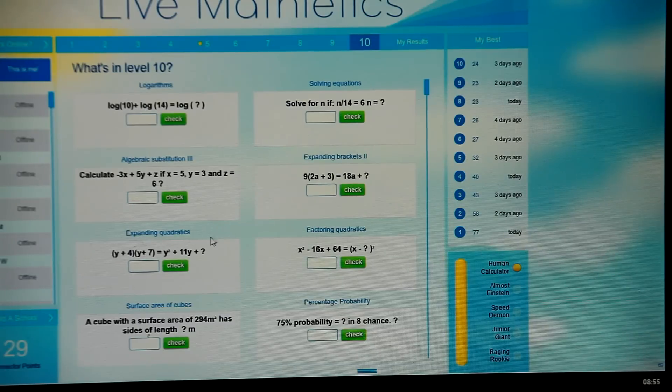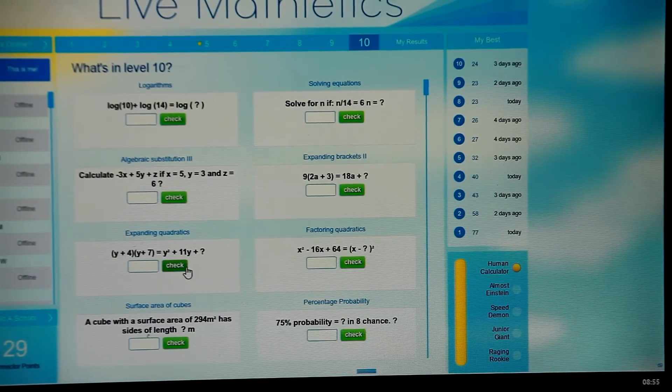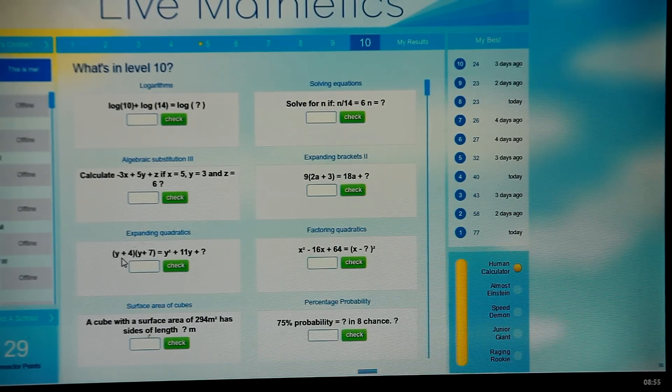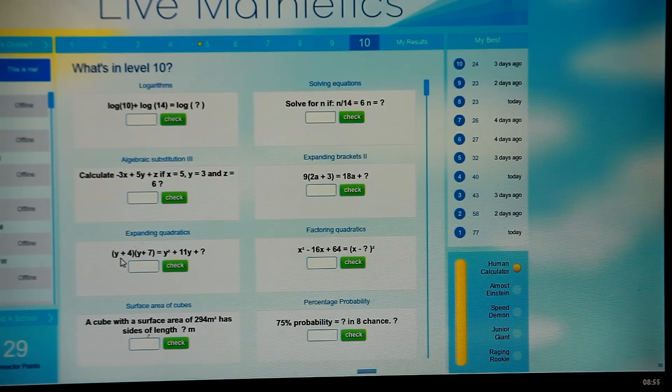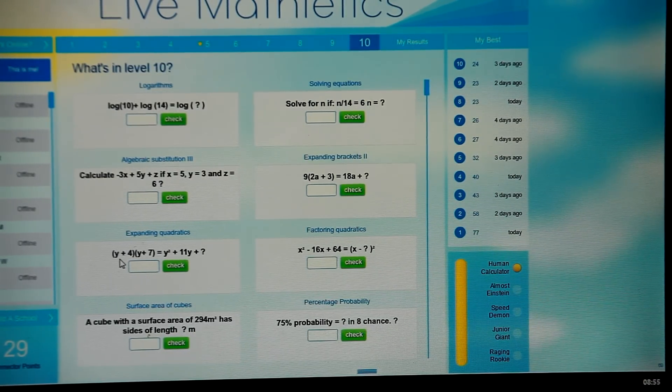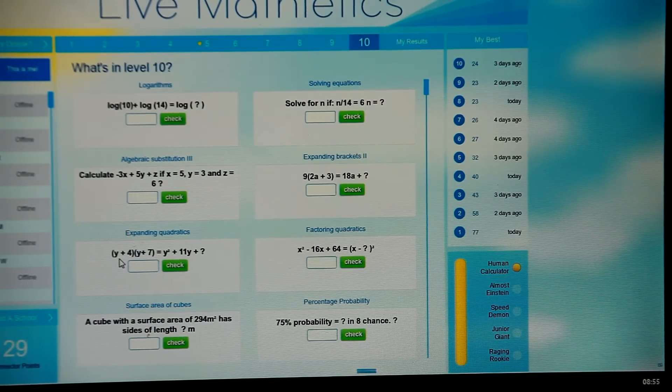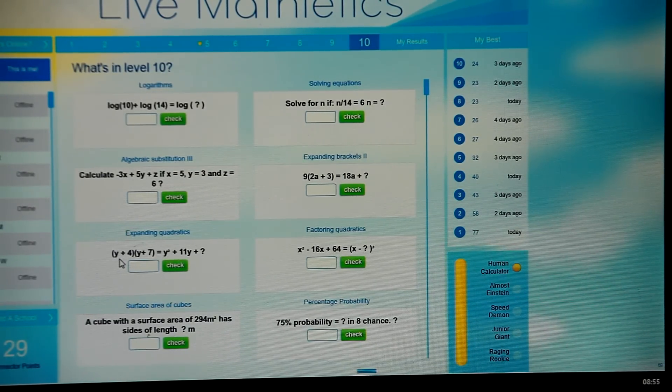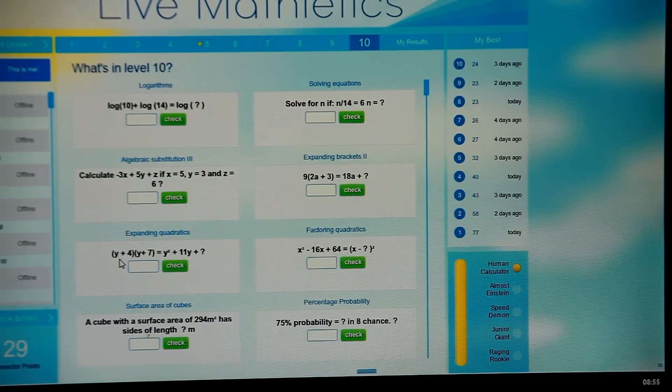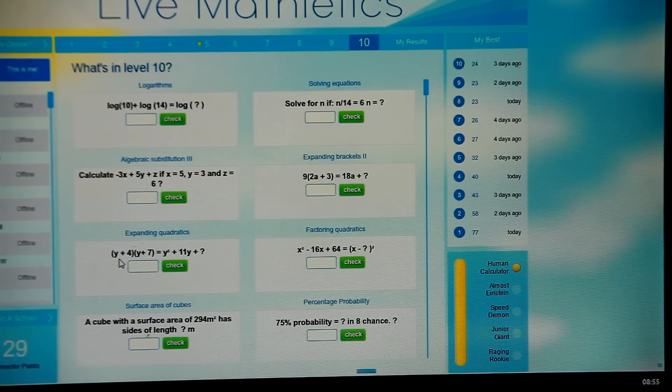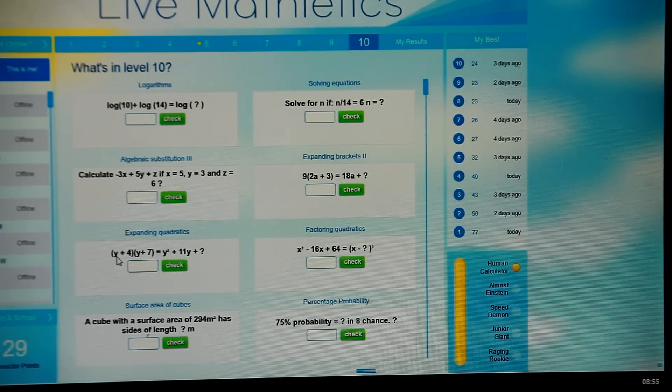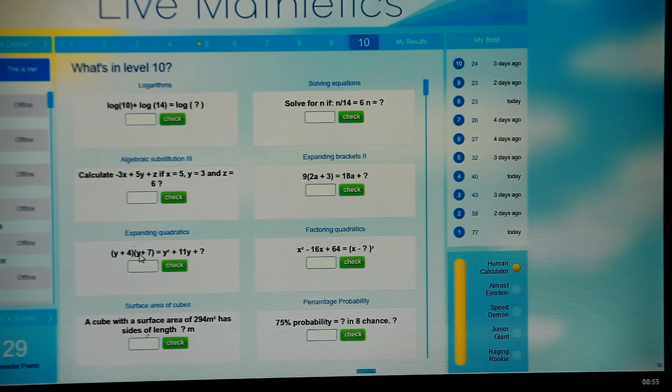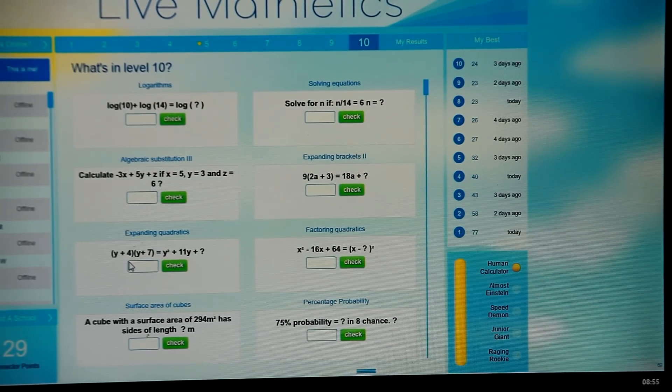Now when you get a situation like this, these are called quadratics. What you have to remember is the mnemonic FOIL, F-O-I-L, which stands for firsts, outers, inners, and lasts.